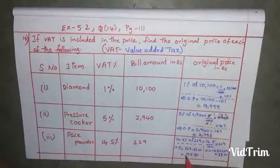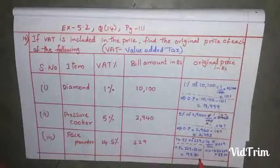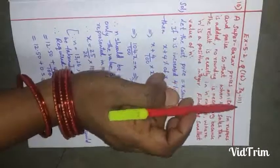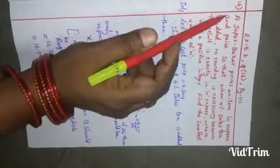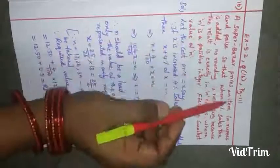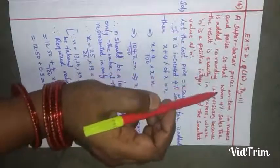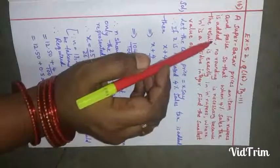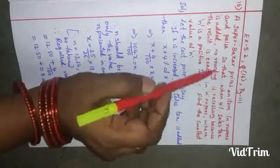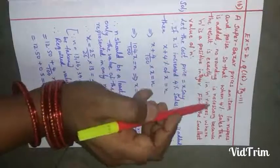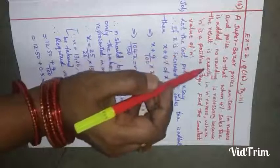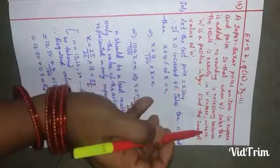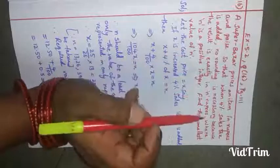From the bill amount of 229 we subtract the value added tax of 33.20, giving us 195.80 rupees as the original price of face powder. Next is Exercise 5.2, Question number 16, page 111. A super bazaar prices an item in rupees and paise such that when 4% sales tax is added, no rounding is necessary because the result is exactly n rupees, where n is a positive integer. Find the smallest value of n.